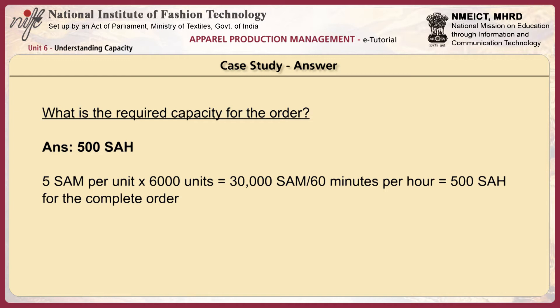Let us understand what the required capacity for the order is. The order is 6,000 units and the SAM per unit is 5 minutes. So the required capacity is 5 × 6,000 = 30,000 SAM, or converting to Standard Allowed Hours (SAH), it is 500 SAH.